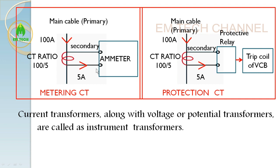Due to the CT ratio, if 100 amps is flowing in the primary, the CT will produce 5 amps in the secondary if the ratio is 100/5. This 5 amps is taken and fed to either meters, if it is a metering CT, or to protective relays, if it is a protection CT. The voltage transformer functions similarly — in a current transformer we reduce the current and feed it to meter or protection systems.